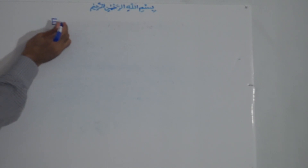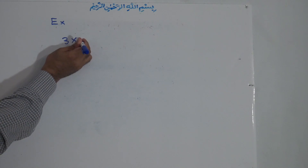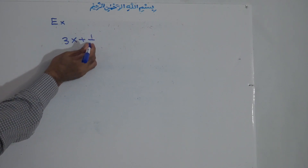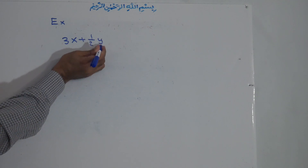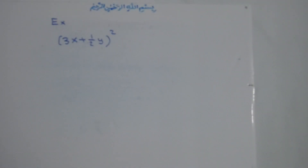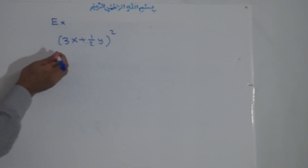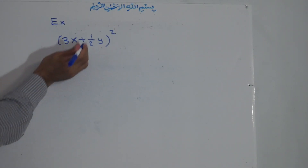Now let's see how to apply the formula with an example. The example is the binomial 3x plus one-half y, all to the power of 2. We use the formula for this binomial where a equals 3x and b equals one-half y.